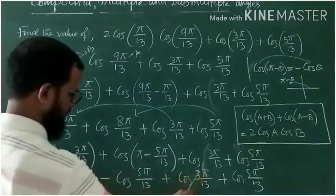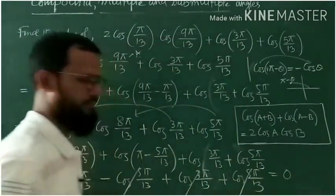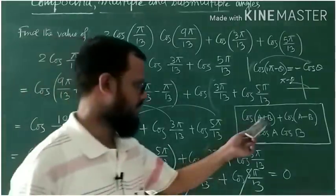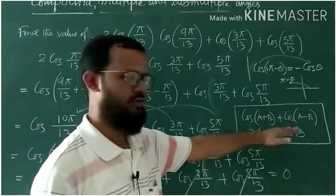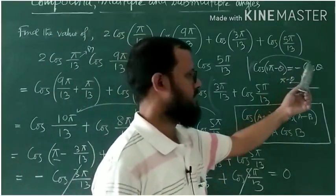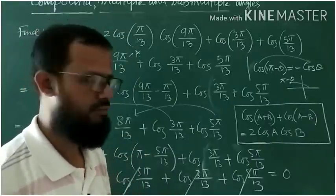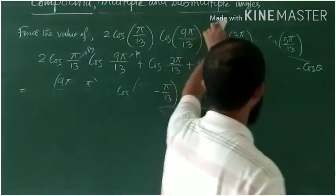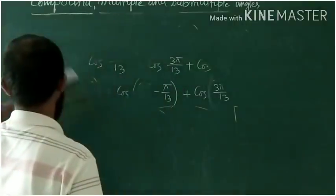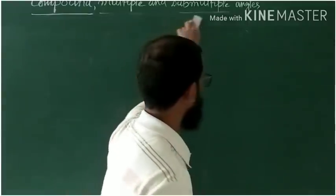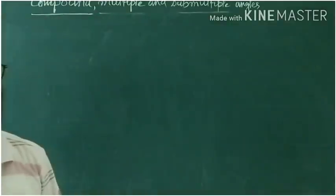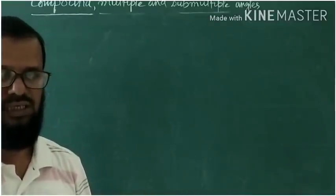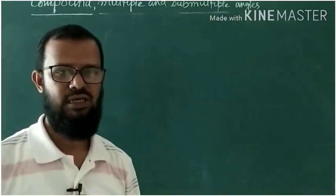Finally, the +cos(3π/13) cancels with −cos(3π/13), and the +cos(5π/13) cancels with −cos(5π/13), and your result is 0. In this way you can solve such questions. The two formulas applied were: 2cosA·cosB = cos(A+B) + cos(A−B), and the quadrant rule cos(π−θ) = −cosθ. In trigonometry, formulas should be at your fingertips. The more you practice, the more easily you will recall which formula to apply.